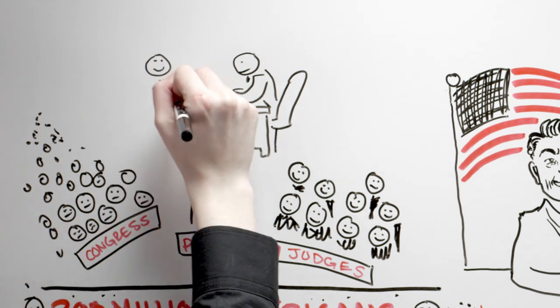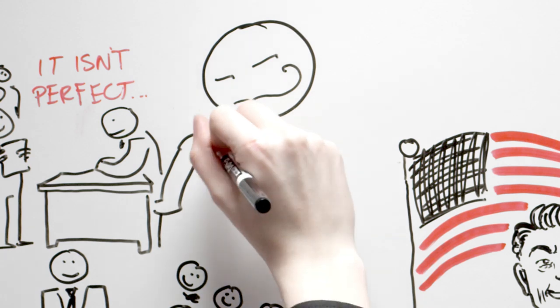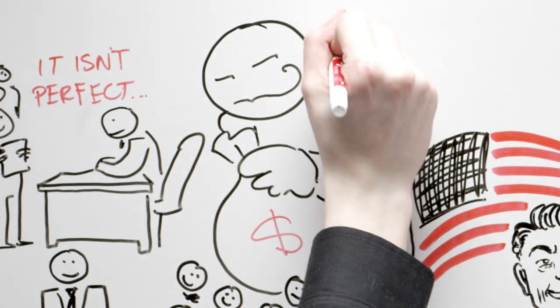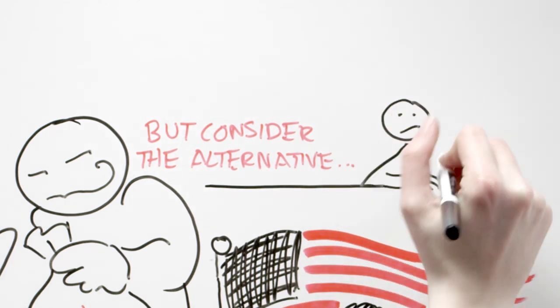It isn't perfect. Lobbyists, special interests, and corruption still exist. But consider the alternative: as a minor shareholder in a major company, you wouldn't even have the opportunity to vote on major business decisions like whether or not to remove a failing CEO.